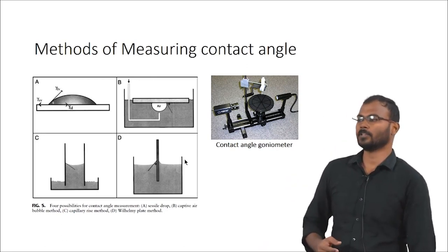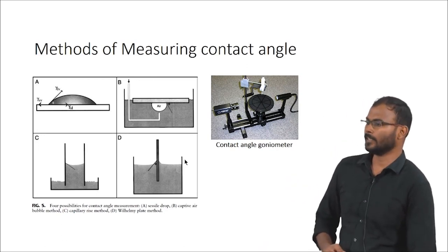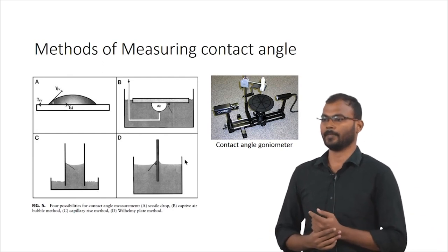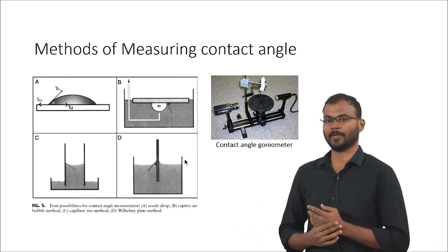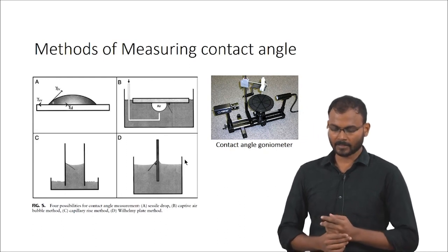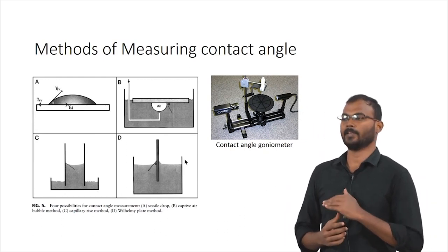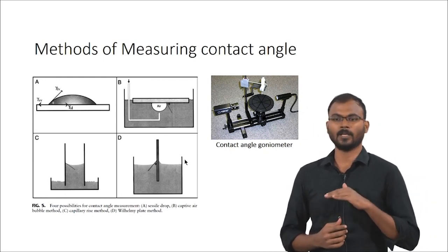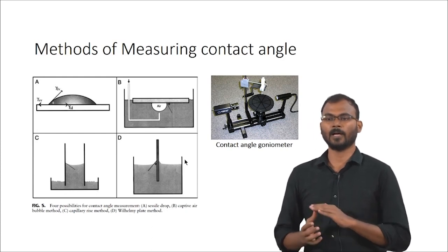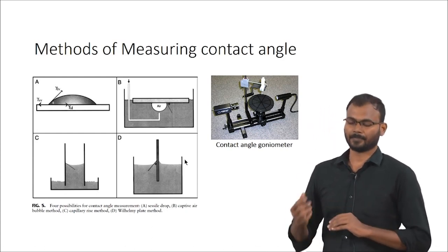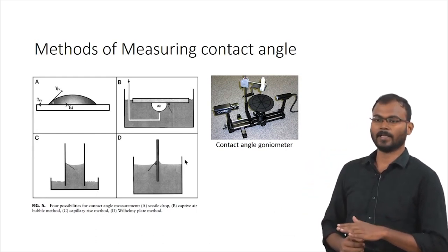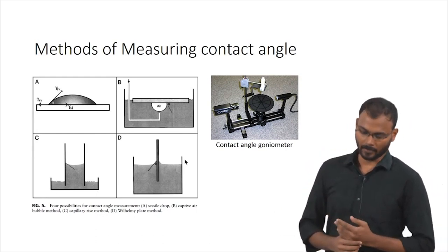The advantages of contact angle measurement are that it is very cheap and can be used immediately after preparing material surfaces. The major disadvantage is that if the surface is very rough or non-uniform, it will produce different angles at different locations.